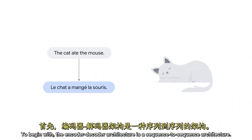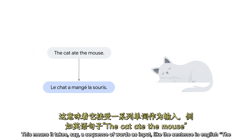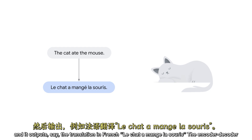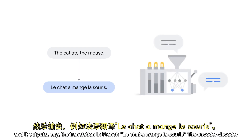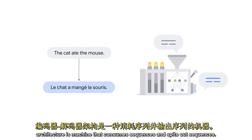The encoder-decoder architecture is a sequence-to-sequence architecture. This means it takes, for example, a sequence of words as input like the sentence in English, 'the cat ate the mouse,' and it outputs the translation in French, 'le chat mange la souris.' The encoder-decoder architecture is a machine that consumes sequences and puts out sequences.